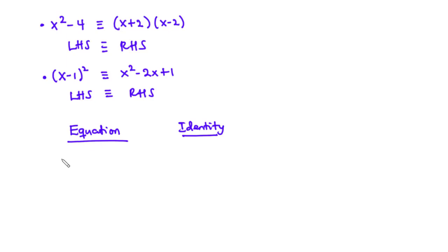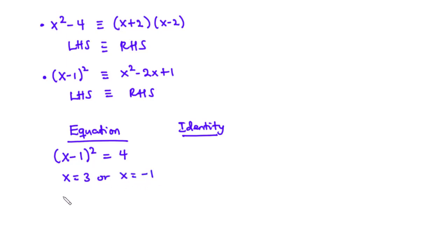Consider the equation (x − 1)² = 4. This equation is true if and only if x = 3 or x = −1. We say that the equation (x − 1)² = 4 is true for a restricted set of values: x = 3 or x = −1. However, for an identity, the equality is true for all values of the variable.